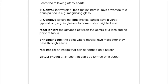A concave lens is a diverging lens, and diverging means spreading out. So if you have rays which pass through a diverging lens, they'll spread out, so they'll never actually meet on the other side of the lens, and we can use those in glasses to correct short-sightedness. The focal length is the distance between the centre of the lens and its point of focus. The principal focus is the point where the parallel rays meet after they pass through the lens. And the difference between a real image and a virtual image is that a real image can be formed on a screen and a virtual image cannot.